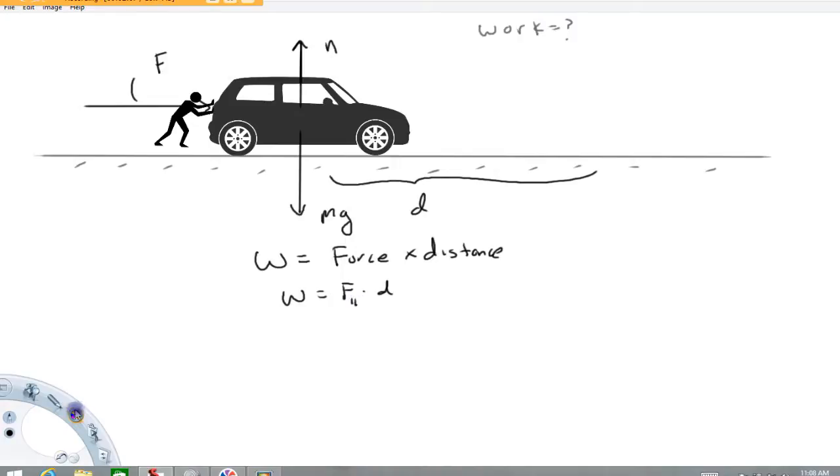So in this example, this force that this person is applying is doing the work if the car is moving to the right. The gravitational force in this example is not doing any work because it makes a right angle to the direction that the car is moving. Same thing with the normal force. In this example the normal doesn't do any work because it makes a right angle to the direction that the car is moving. So work is force times distance.